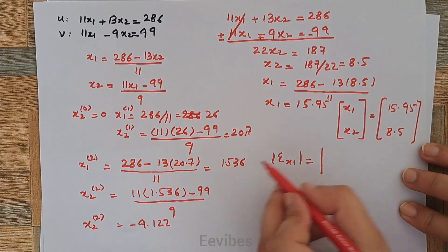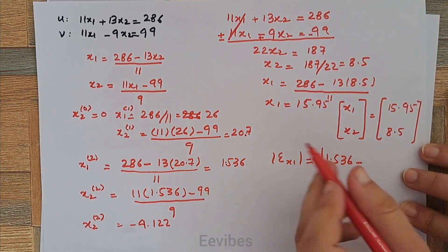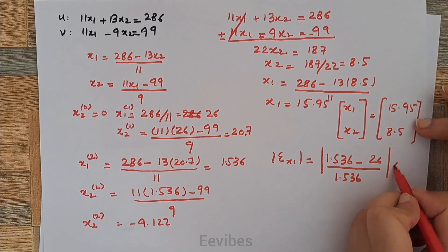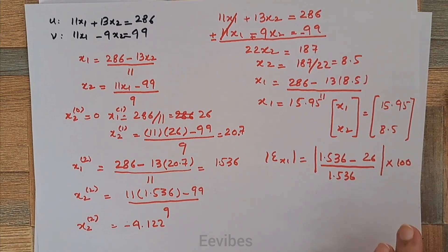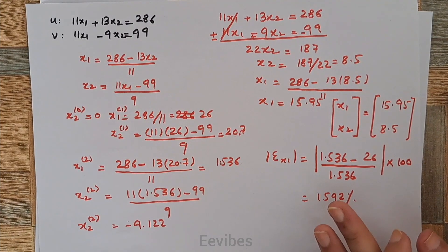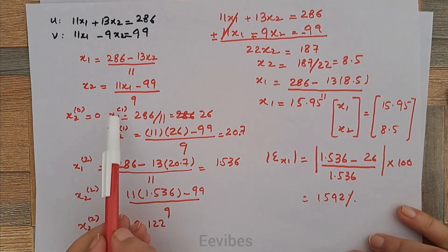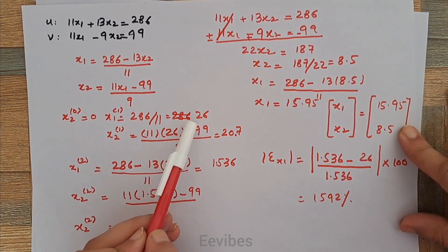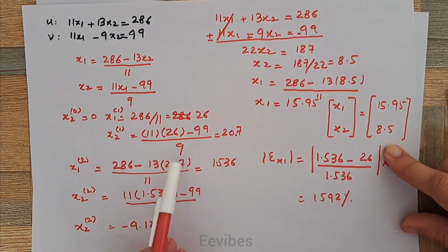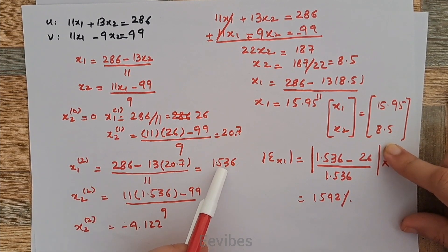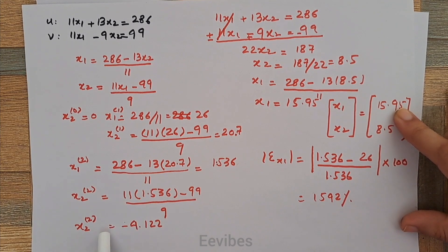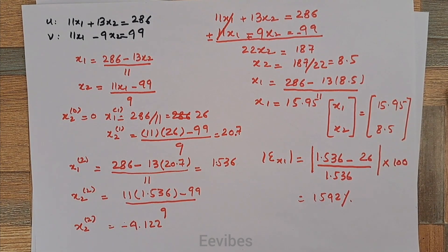The percentage relative error is determined from the recently determined value minus the value of x1 in the previous iteration, divided by the newly updated value of x1, multiplied by 100. The error is equal to 1592%, which is a very huge error. Also, comparing first iteration values with the actual solution, the value of x2 has been drastically changed, and the next updated x1 is quite far from the actual value.